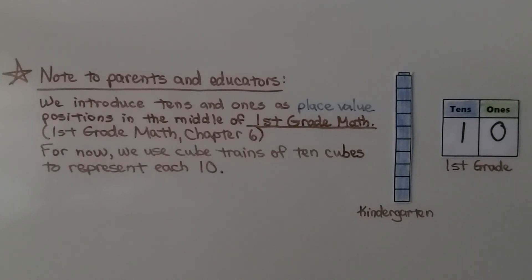So here's a quick note to the parents. We introduce tens and ones as place value positions in the middle of first grade math. In fact, it's actually first grade math chapter 6, so it's the middle of the school year that we introduce place values. For right now, for kindergarten, we use cube trains of 10 cubes to represent each 10. That's when we'll be talking about place values.